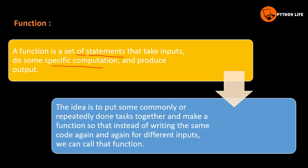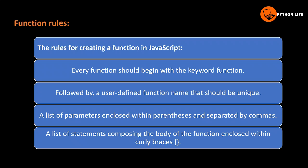The input is processed and the output is produced by a function. The idea is to put some commonly or repeatedly done tasks together and make a function, so that instead of writing the same code again and again for different inputs, we can call that function. If you want to create a new function, you can use certain rules.